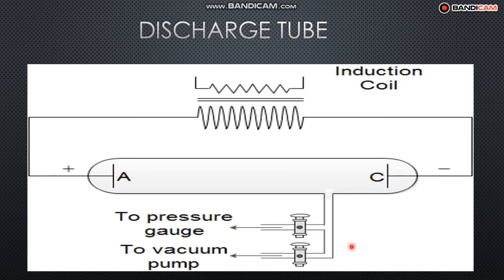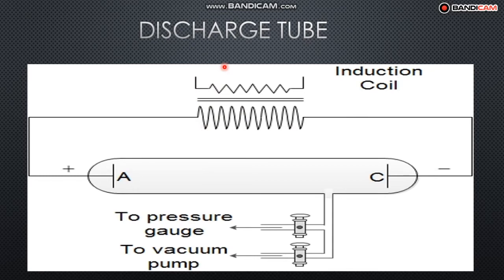A vacuum pump is connected to reduce the pressure inside the tube. The tube is about 0.5 to 0.6 meters long and about 0.04 to 0.05 meters in diameter. The vacuum pump reduces the pressure inside the tube. An induction coil provides a high potential difference — about 30,000 volts — across the electrodes of the tube.